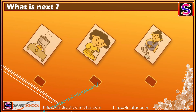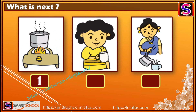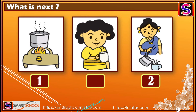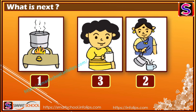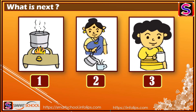Let's see another example. First we're gonna boil the milk, then serve it in the glass, and then drink it. So the sequence is gonna be like one, two, and three.